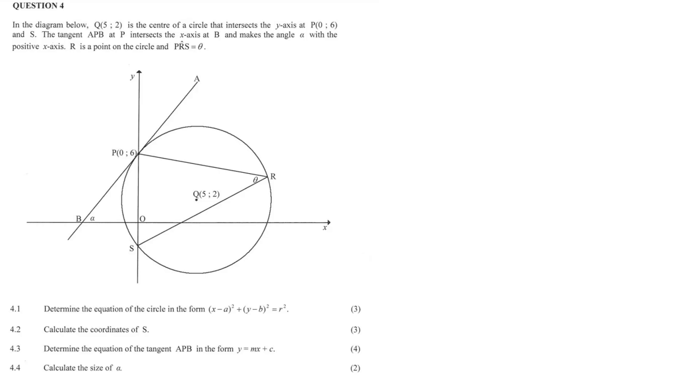4.4, calculate the size of theta. So we know that the gradient of AB is equal to 5 over 4. So tan M is equal to theta, our angle of inclination formula. We know what the gradient is, so that's tan 5 over 4. Just plug it in your calculator. Sorry, I just made an error with that.